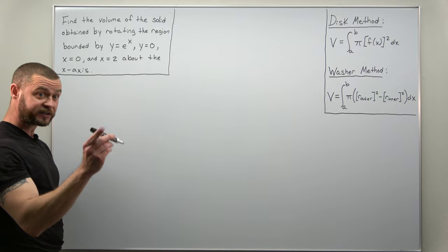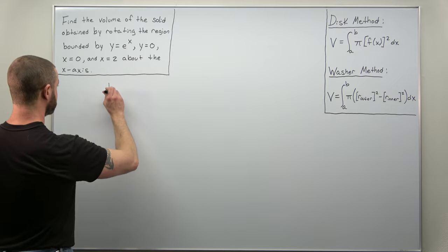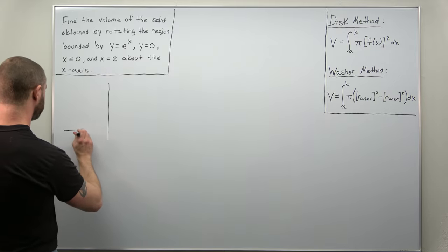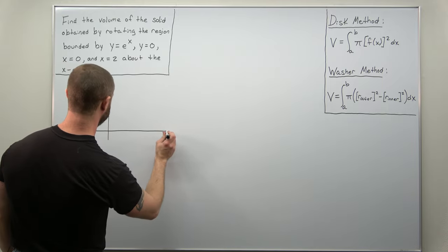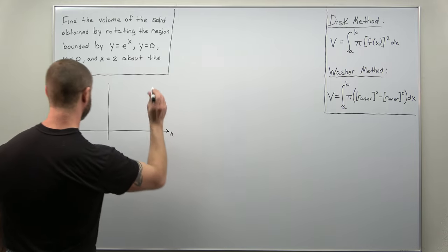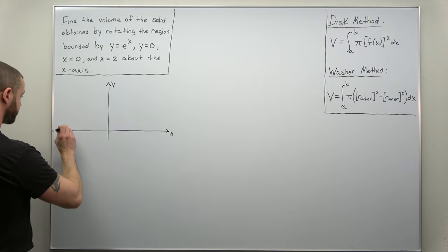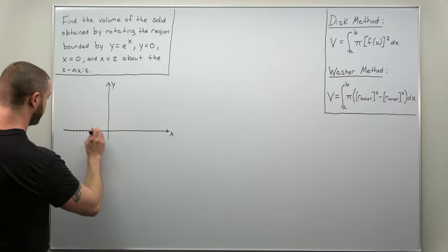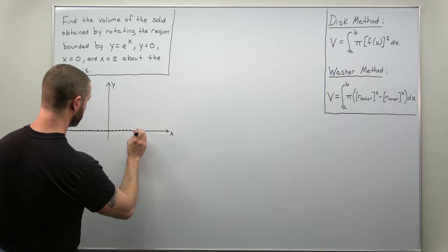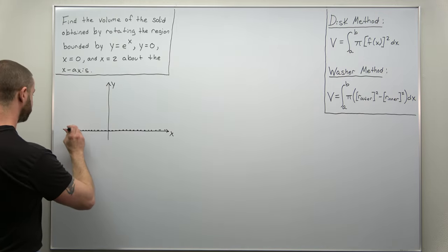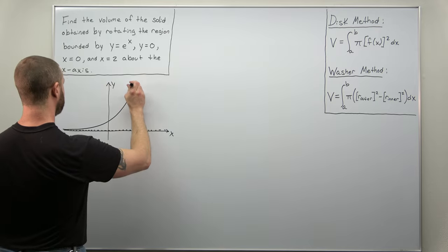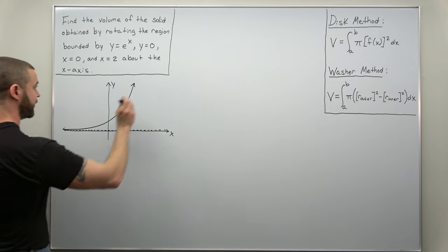I'm going to start with the graph of the exponential function first. This is a fairly important graph or function for the calculus sequence, so hopefully you know the graph. There's a horizontal asymptote of y equals zero and then your basic graph where the shape looks like that.